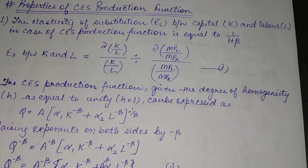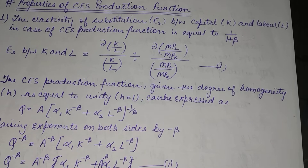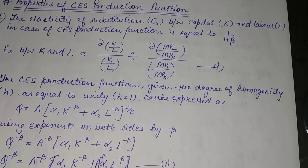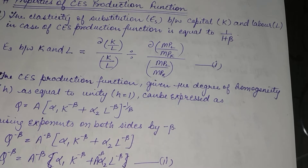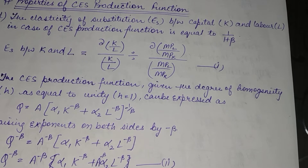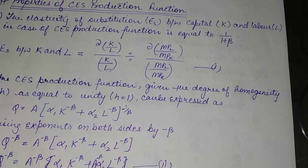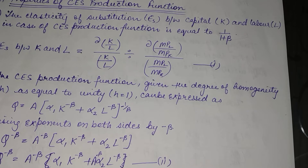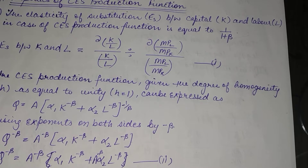Starting with the first property: the elasticity of substitution between capital K and labor L in the case of the CES production function is equal to 1 upon (1 + β). The formula to calculate elasticity of substitution is: σ equals the partial derivative of the capital-labor ratio, whole upon the capital-labor ratio, divided by the partial derivative of marginal productivity of labor upon marginal productivity of capital, divided by the ratio of marginal productivity of labor upon marginal productivity of capital. Take this as equation 1.